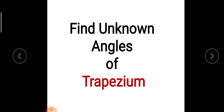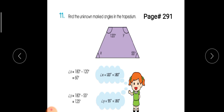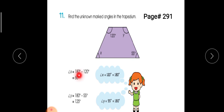Now let's learn about finding unknown angles of trapezium. We have already cleared the concept of trapezium. We will discuss question number 11 on page number 291. In a trapezium, the two co-interior angles sum to 180 degrees. If we have one angle, we subtract it from 180 to find the other. Here we subtract 120 from 180 and get 60, so angle X equals 60 degrees.